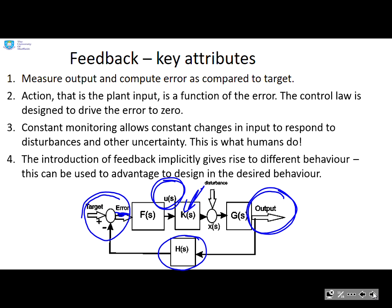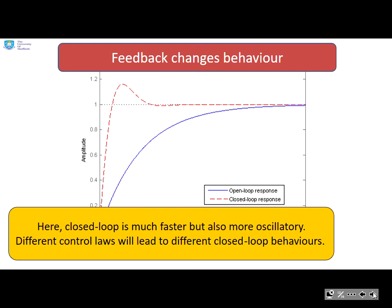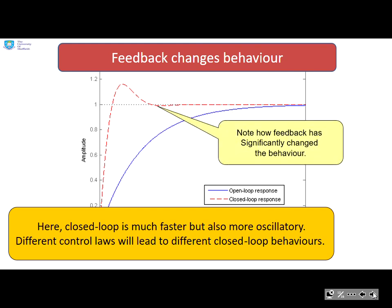A key point: the introduction of feedback implicitly gives rise to different behaviour, and this can be used to advantage in designing desired behaviour. For example, the closed loop behaviour shown by the red line is very different from the open loop behaviour shown by the blue line. Different control laws — different decision-making processes — lead to different closed loop behaviours, so we can exploit this flexibility in our control laws to get the behaviour that we would like.